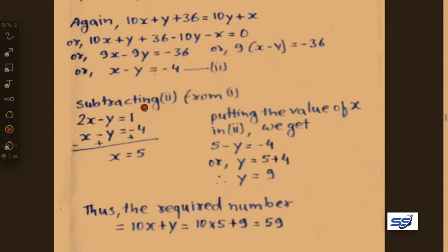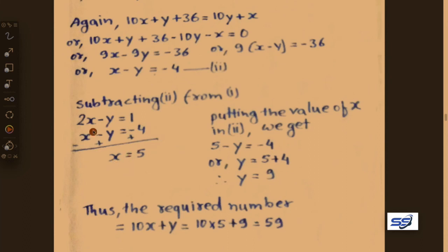Subtracting equation 2 from 1: first equation is 2x minus y equals 1, second is x minus y equals minus 4. Changing the sign of the lower part: minus x plus y plus 4. Then y cancels, giving 2x minus x equals x equals 5.